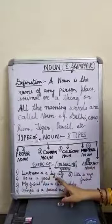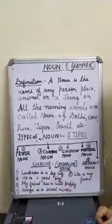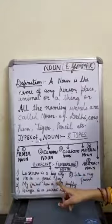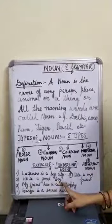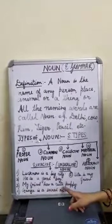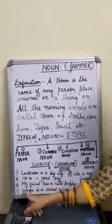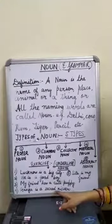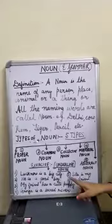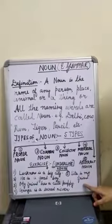Lucknow is a big city — you will underline the noun. He is a good boy. My friend has a cute puppy. Ganga is a sacred river. Number five: Sita is my friend.